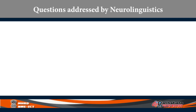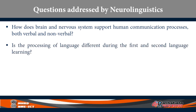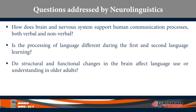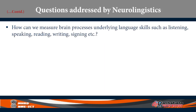What are some of the questions addressed by Neuro-linguistics? How does the brain and nervous system support human communication processes, both verbal and non-verbal? Is the processing of language different during first and second language learning? Do structural and functional changes in the brain affect language use and understanding in older adults? In what specific ways does language get affected after brain damage, and is this different across different languages? How can we measure brain processes underlying language skills like listening, reading, speaking, writing, signing, etcetera?